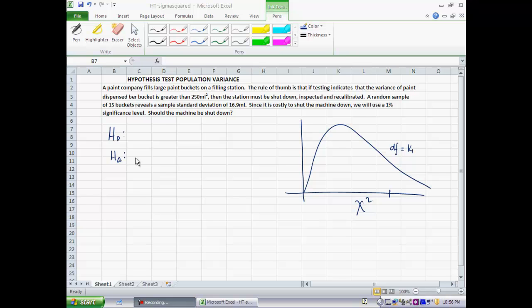In this segment, we'll work a problem to illustrate how one goes about doing hypothesis testing with the population variance. The problem setting is the following: a paint company fills large paint buckets in a filling station, and the rule of thumb is that if testing indicates that the variance of paint dispensed per bucket is greater than 250 milliliters squared, then the station must be shut down, inspected, and recalibrated.